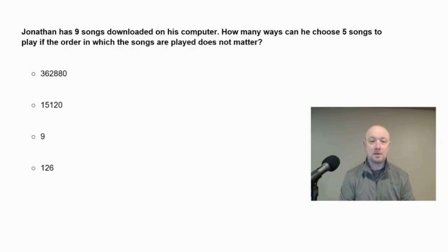Jonathan has nine songs downloaded on his computer. How many ways can he choose five songs to play if the order in which the songs are played does not matter? Alright, so what we want to look for is the difference between a permutation and a combination. So in this case here, it says that the order in which the songs play does not matter. So that means that we are going to use the combination formula and the formula for combinations would be n choose r, which is equal to n factorial divided by r factorial times n minus r factorial.